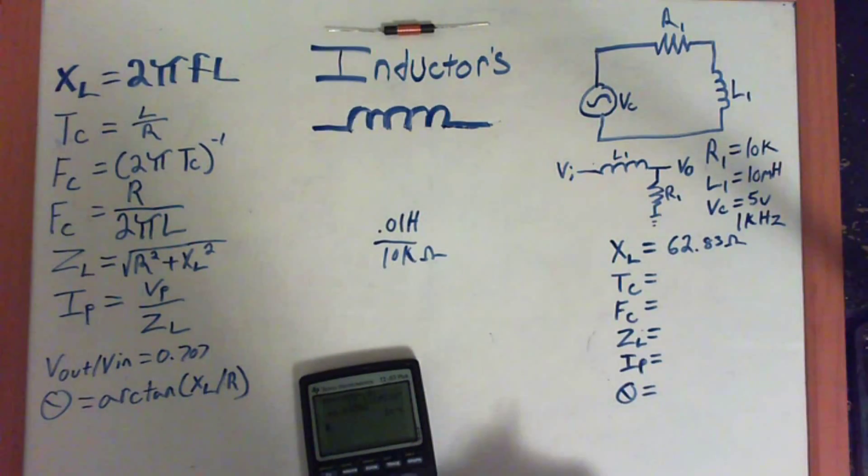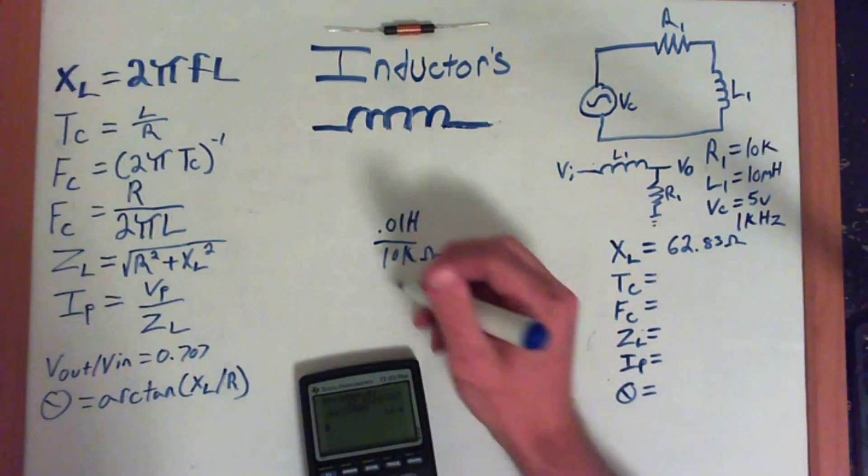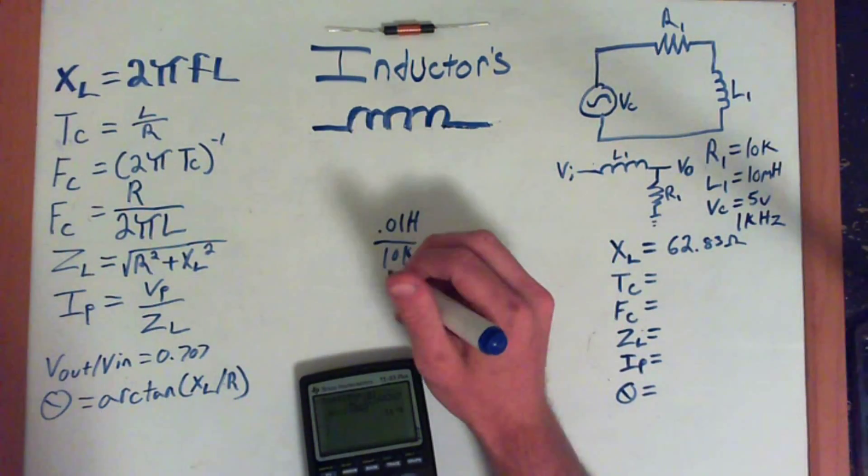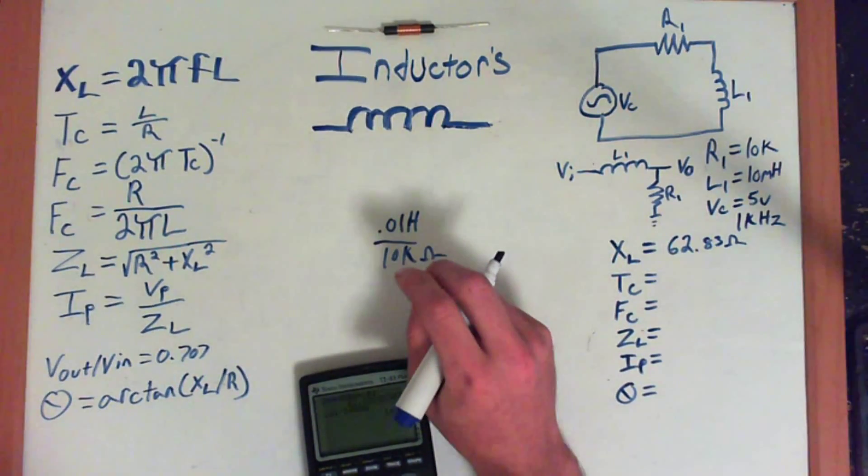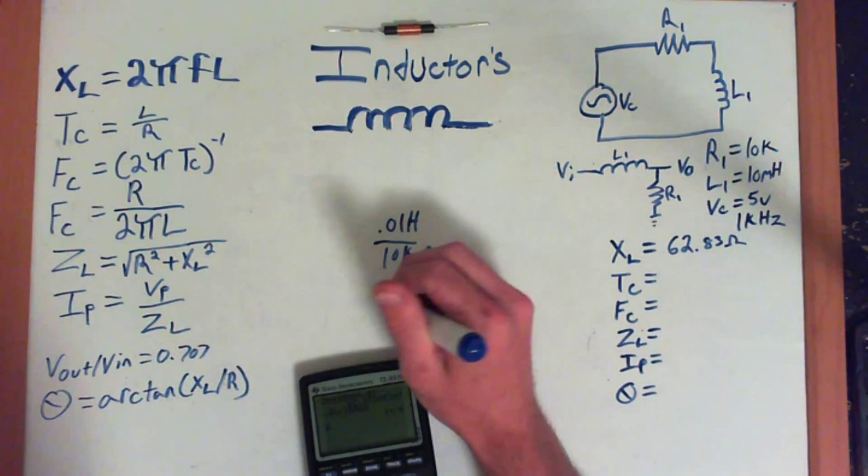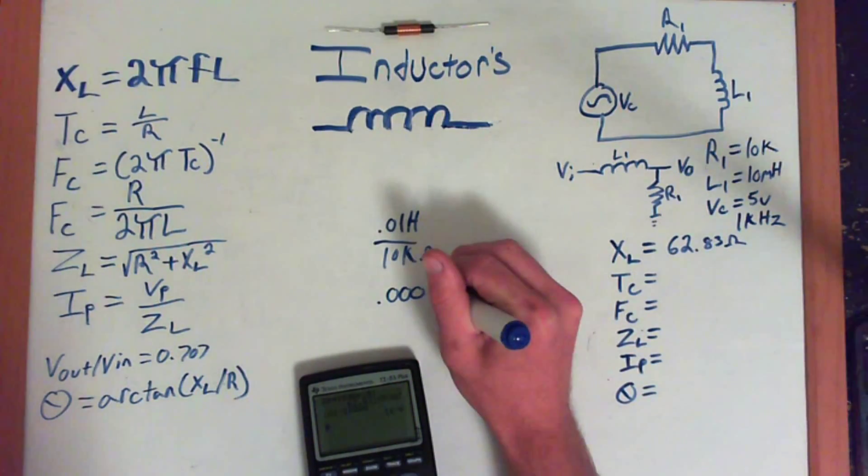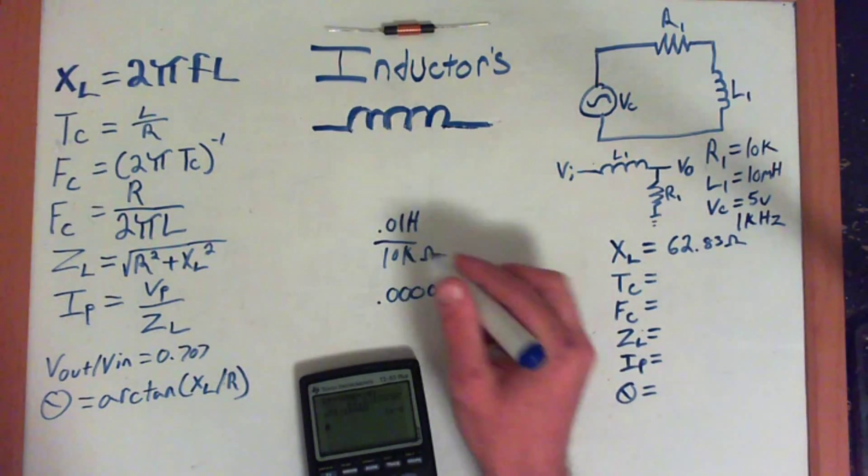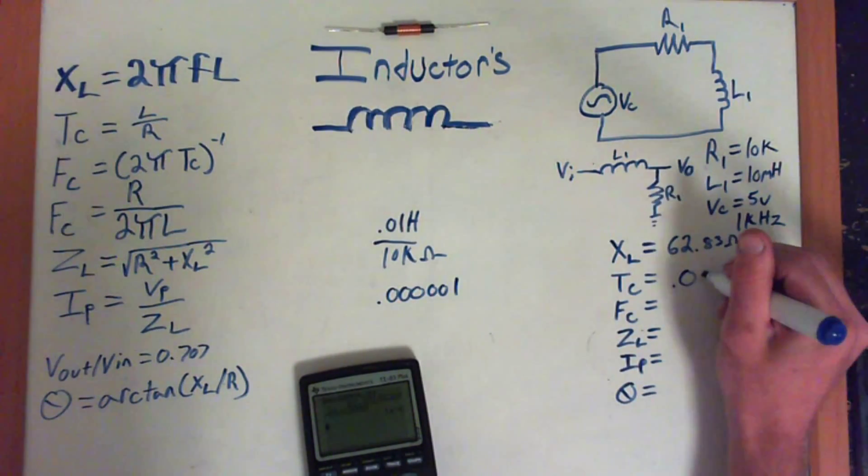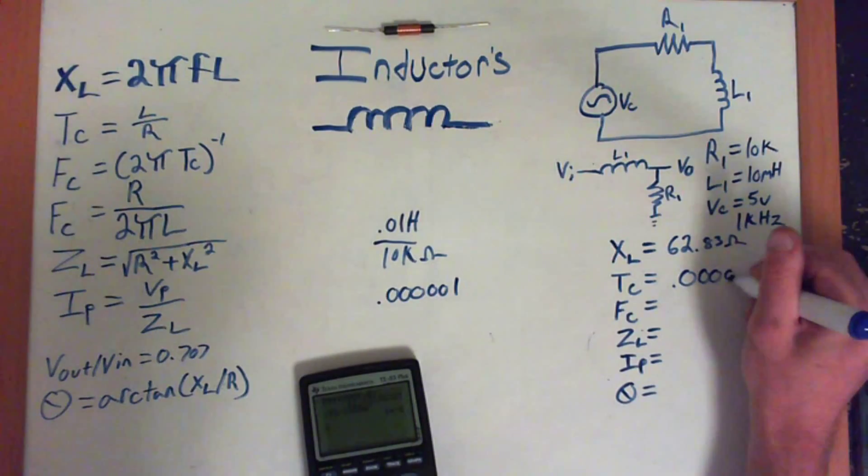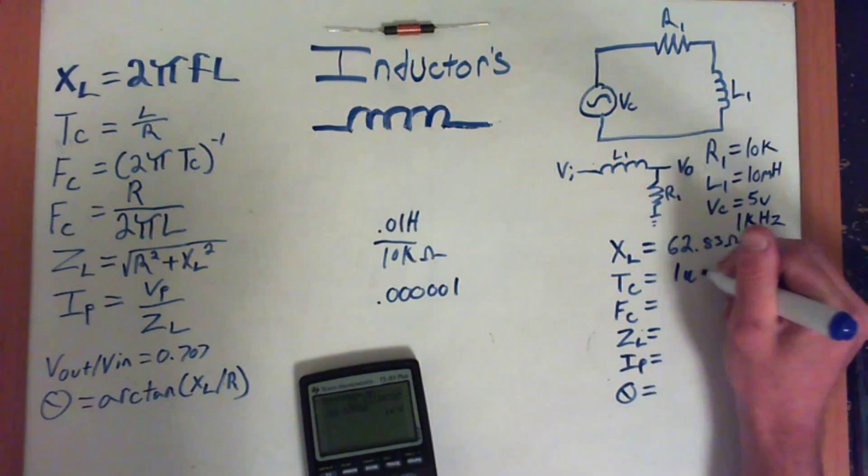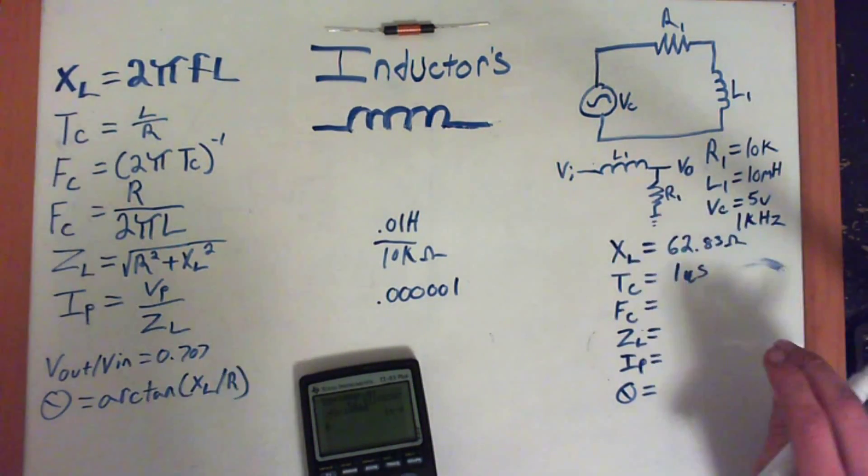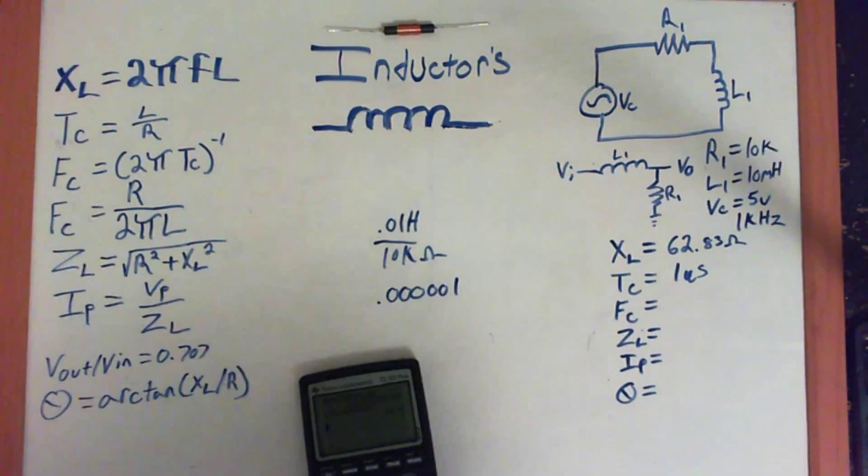0.01 divided by 10,000, which is just going to move the decimal place. So it's going to be 1 microsecond, 1 millionth of a second. So 0.000001. So that's our time constant. Or, you can simply write that as 1 µs, or microsecond, which is that little fancy u thing and the s for seconds.